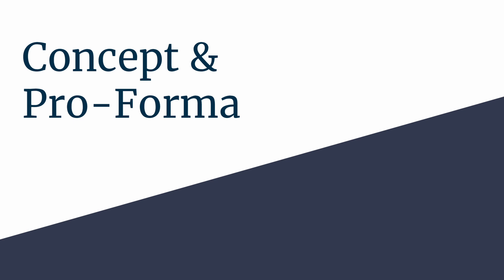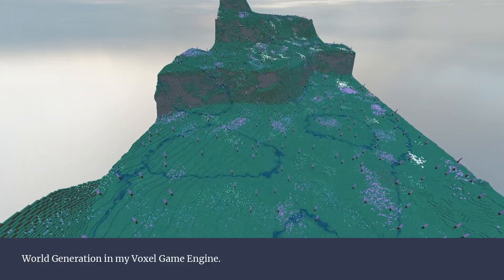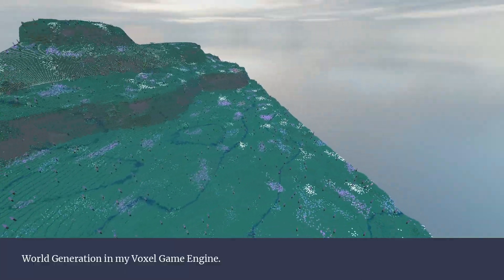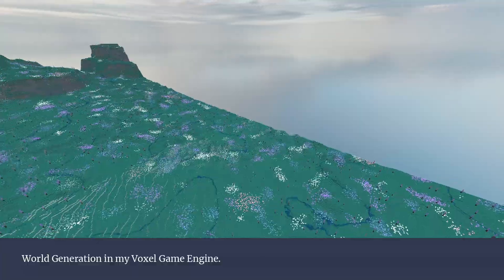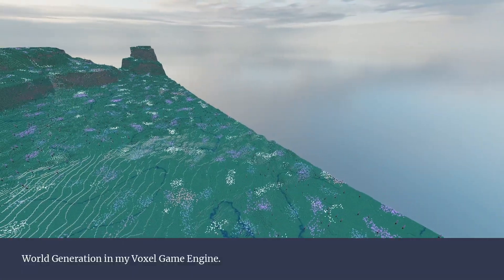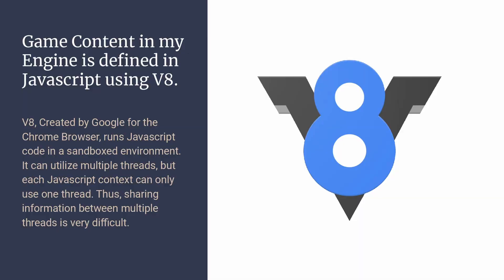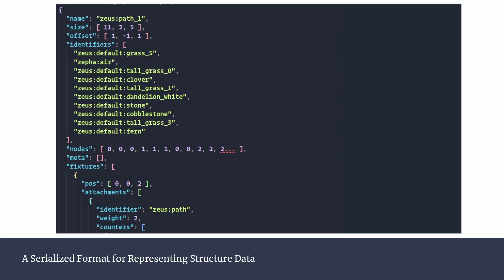I've put a lot of focus into optimizing map generation in my voxel engine, heavily parallelizing the mapgen threads based on available machine cores, meaning I can't expect serial execution when generating structures. This effectively makes it impossible to run arbitrary code for individual structures, as all structures are defined in JavaScript and processed using the V8 runtime. V8 is entirely single-threaded within a given context, so instead I decided to create a serialized structure format similar to Minecraft's but with more powerful data-driven logic so that structure patterns and constraints could be represented in the serial format.